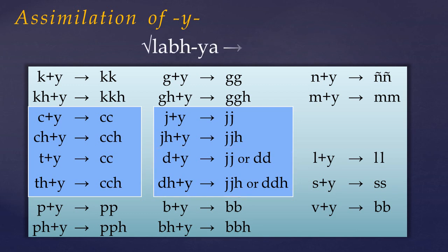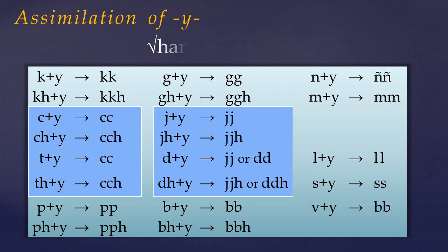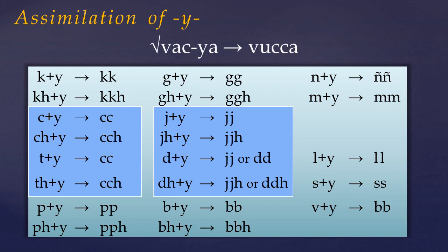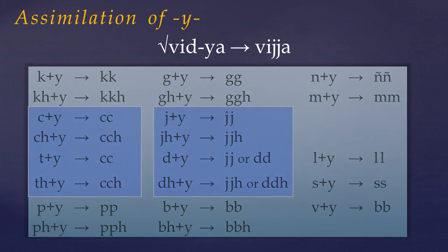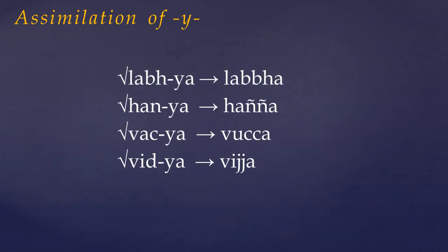So if we now look at some examples: from the root LAB meaning to get, we get LABBHA, meaning 'got' or 'is taken'. From the root HAN meaning to strike, we get HAÑÑA, meaning 'struck' or 'killed'. And VACA, to speak, becomes VUCCA, meaning 'is said' or 'spoken'. And finally, from the root VID to find, we get VIJJA, meaning 'found'. So keep a look out for those double consonants, as the passive stem can be hard to recognise because of this assimilation.